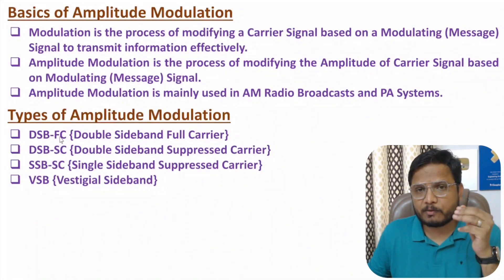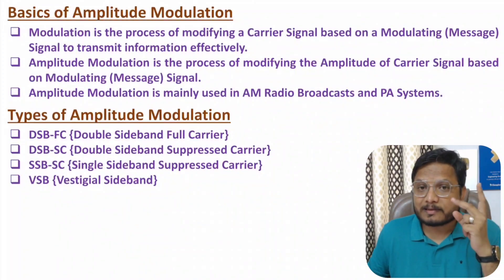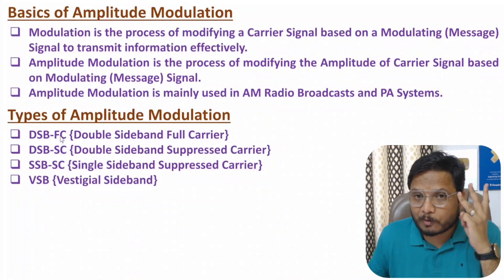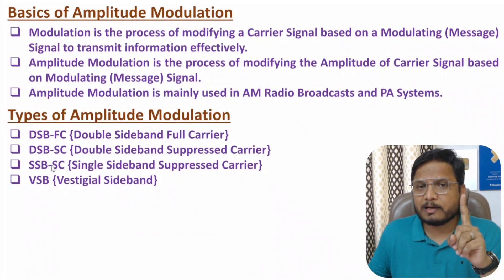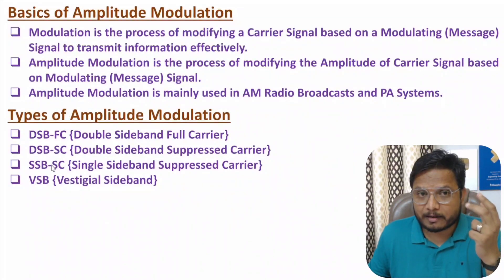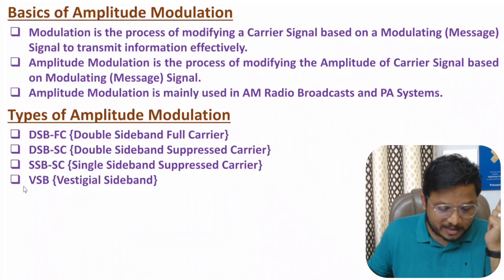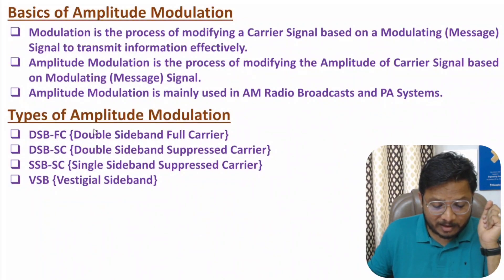With DSBFC, we have in total three different bands. One is the carrier band having frequency omega c. Second is the upper sideband having frequency omega c plus omega m. And the third one is the lower sideband having frequency omega c minus omega m. In DSBSC, we will be eliminating the carrier band. In SSBSC, we will just transmit either the upper sideband or the lower sideband. In future videos, I will discuss DSBSC, SSBSC, and VSB. In this video, I will discuss DSBFC, which is also referred to as amplitude modulation.